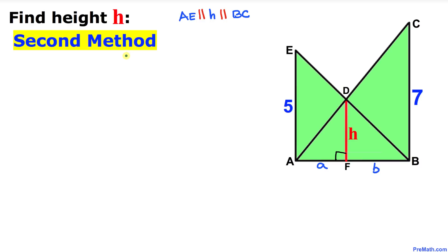Now let me show you the second method, and this second method is called the crossed ladder theorem: 1 over H equals 1 over AE plus 1 over BC. Now let's calculate this height H. I can write 1 over H equals 1 over 5 plus 1 over 7.